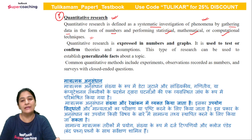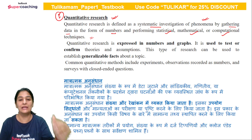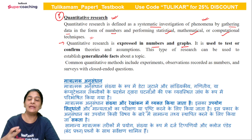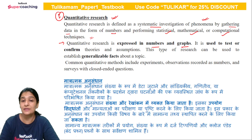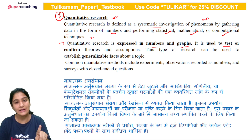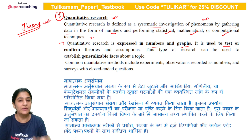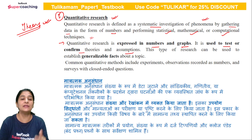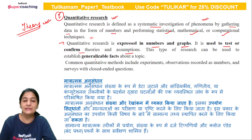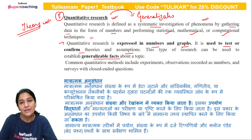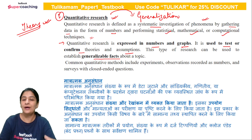In quantitative research, we use a calculative technique on data to extract meaning. Results are mostly expressed in numbers or graphs. Quantitative research is primarily used either to test a theory or to confirm it. Any established theory or assumption can be tested using this kind of research. Another key terminology associated with quantitative research is the concept of generalization — once we test a concept or theory, if we generalize it, we are in the quantitative paradigm.